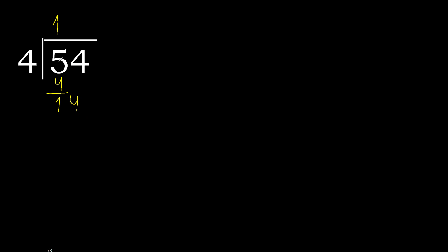Next: bring down the 4, making 14. 4 multiplied by 3 is 12. 12 is not greater — subtract. There is no number remaining, therefore complete with decimal point.